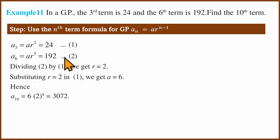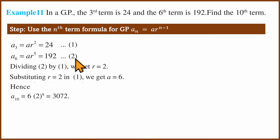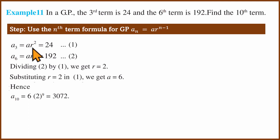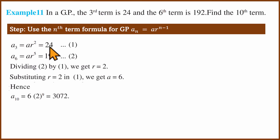We divide equation 2 by equation 1: ar^5 divided by ar² equals 192 divided by 24. The a terms cancel, and r^5 divided by r² gives r³. So r³ equals 8, which simplifies to r equals 2.